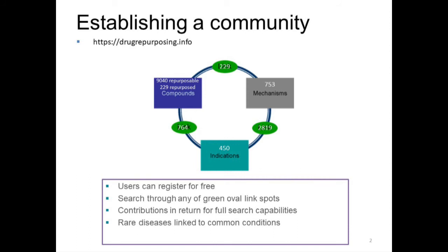Find a Cure is predicated upon the idea of 'treasure your exceptions' — it was one of Nick Cerro's binding phrases — because diseases are linked to one another. One of the aspects of this database which I think is important is that it's not just linkages between compounds, mechanisms, and indications, but also linkages across indications.